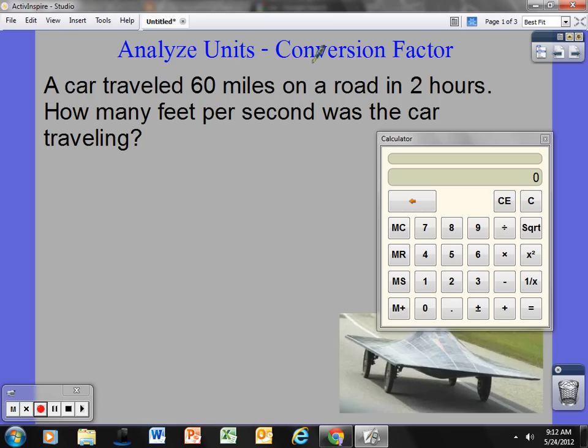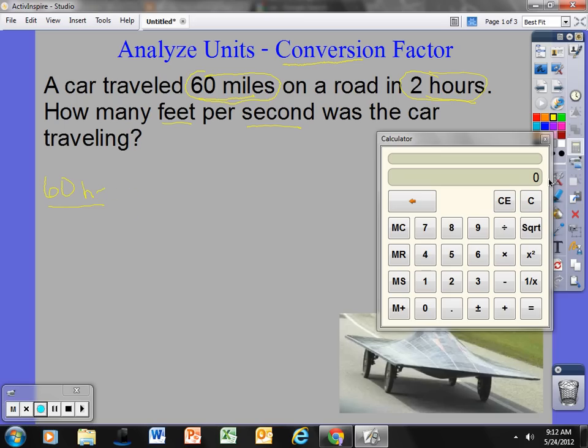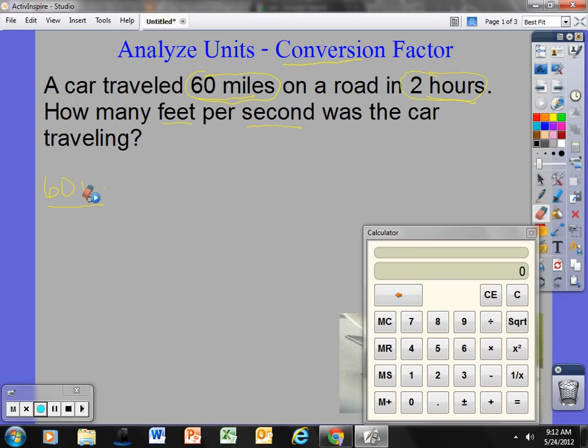If I take a look at this problem, it says a car traveled 60 miles on a road in two hours. How many feet per second was the car traveling? I need to convert, the word conversion, convert, change, miles to feet and hours to seconds. What they gave me first is 60 miles in two hours, so I'm going to make a ratio comparing 60 miles, we're going 60 miles in two hours.